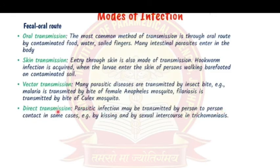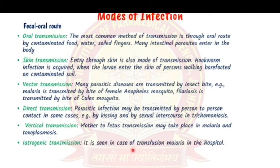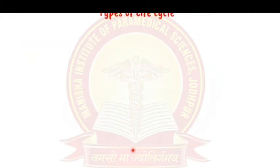Direct transmission occurs person-to-person by direct contact, kissing, or sexual intercourse — trichomoniasis is commonly transmitted sexually. Vertical transmission is from mother to fetus via the placenta — malaria and congenital toxoplasmosis are common examples. Iatrogenic transmission occurs when a parasitic infection is acquired from a hospital setting, such as during surgery.